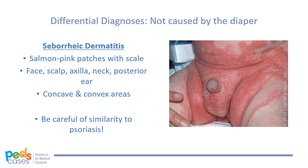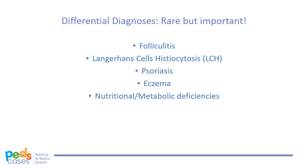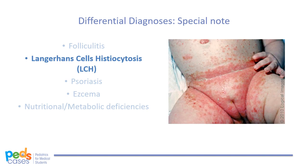Other less common but important causes to consider include folliculitis, Langerhans cell histiocytosis, psoriasis, eczema, and nutritional or metabolic deficiencies. I want to briefly highlight Langerhans cell histiocytosis, or LCH, because it is a life-threatening condition that may involve multiple organs. Skin involvement presents as red-brown papules, often with erosions, crusting, and petechiae. They appear commonly in inguinal creases, the abdomen, neck folds, the axilla, posterior to the ears, and the palms and soles. Other signs may include lymphadenopathy and hepatosplenomegaly. If the diaper rash doesn't improve with optimal treatment and you suspect LCH, remember to refer to a dermatologist for further investigation.